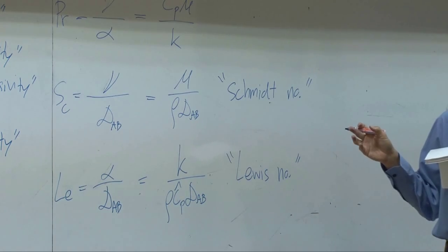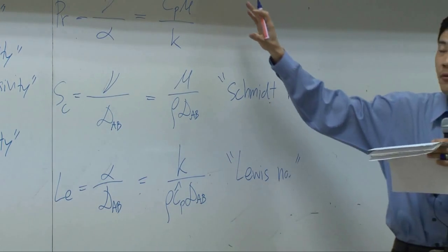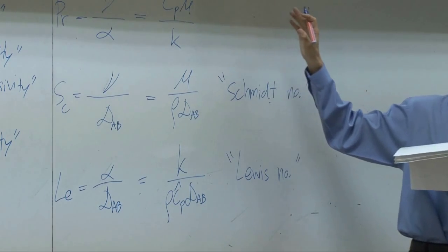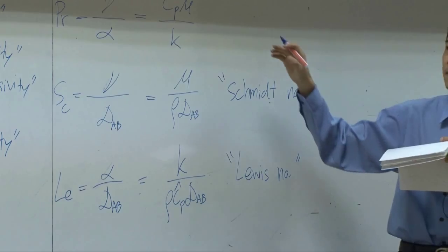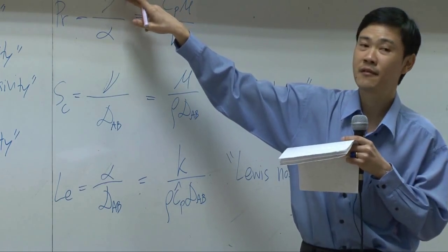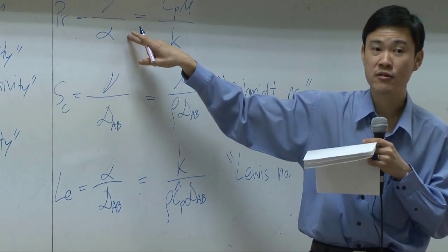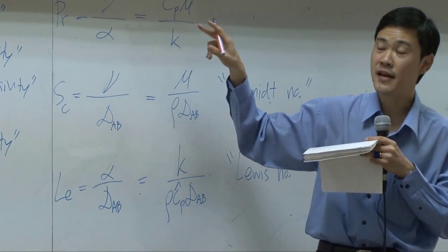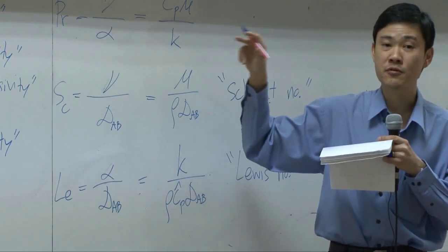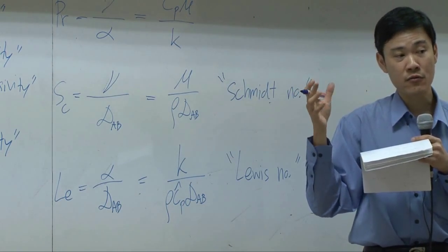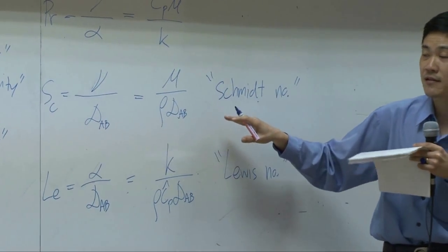What does it mean? What do they represent? First of all, for Prandtl number, I told you that Prandtl number would appear every time you have momentum transport as well as energy transport together. So in the problem where you have convection, you're supposed to be able to convert all the solution to be in terms of Prandtl number.